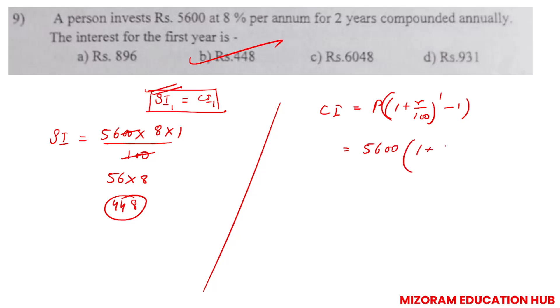One plus 8 by 100 to the power 1 minus 1. This plus 1 and minus 1 you can cancel. Zero divided by 100 equals zero, cancel that. 56 into 8 - 8 times 6 is 48, 8 times 5 is 40 plus 4 equals 44. So 448 is the correct answer to this question.